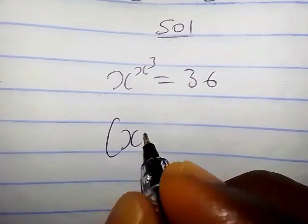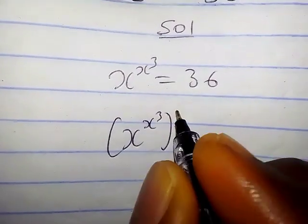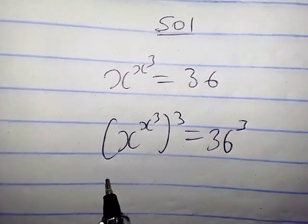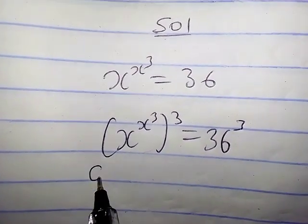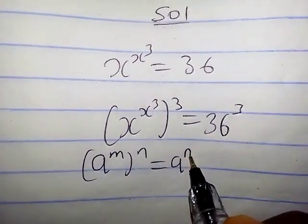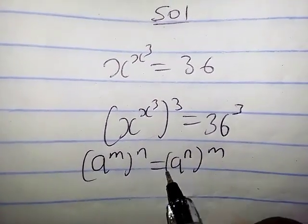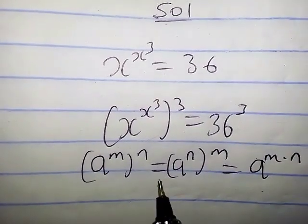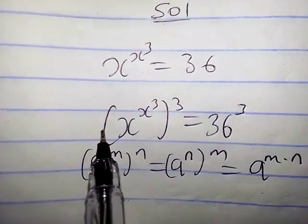We're going to have x raised to power s cube all cubed equals 36 cubed. So we are going to apply properties. Whenever we have (a^m)^n, this is the same thing as (a^n)^m, which also equals a^(m·n). We are going to use this property.